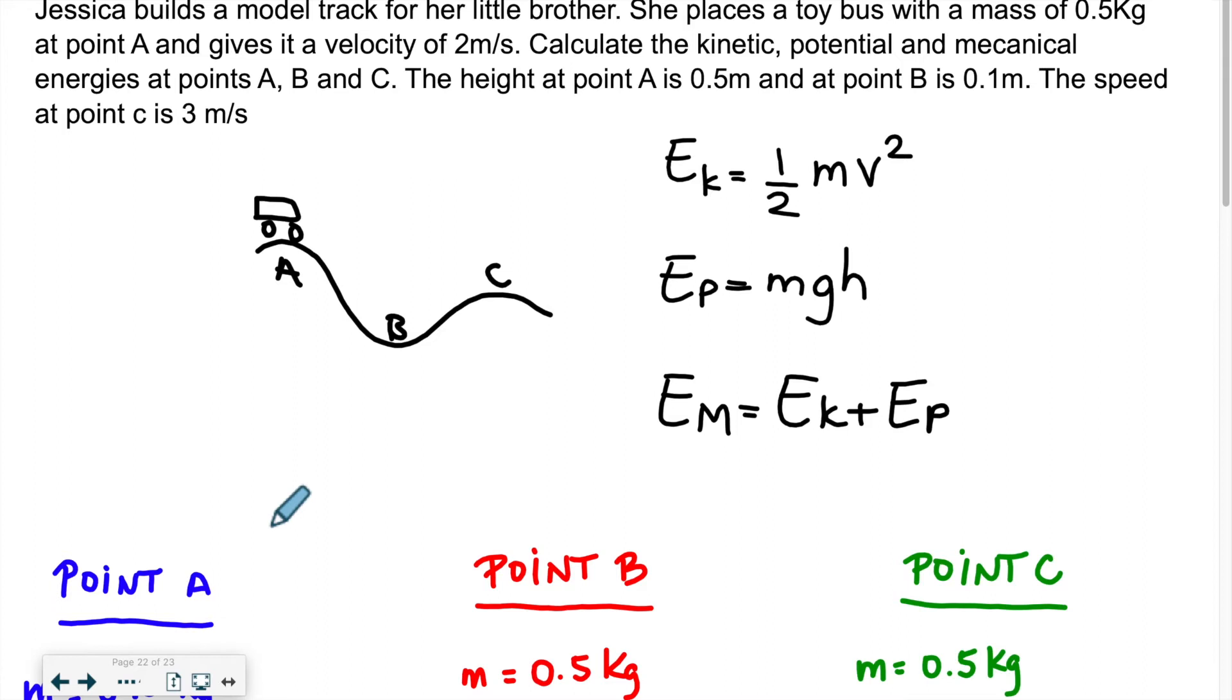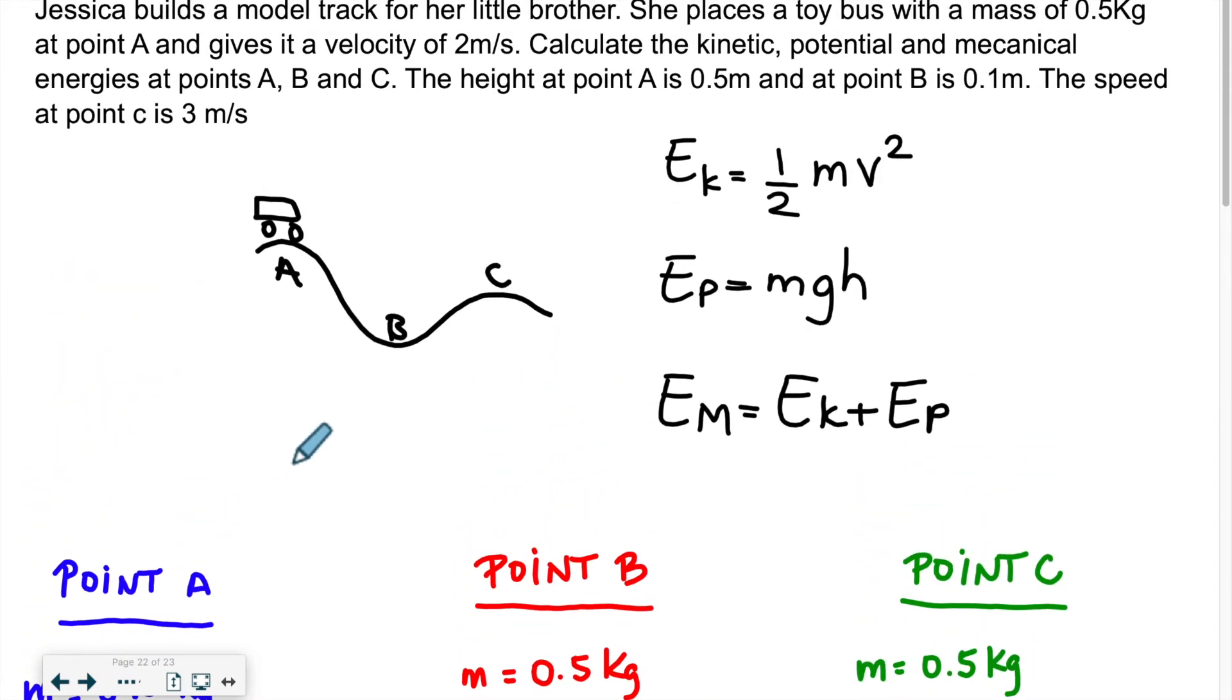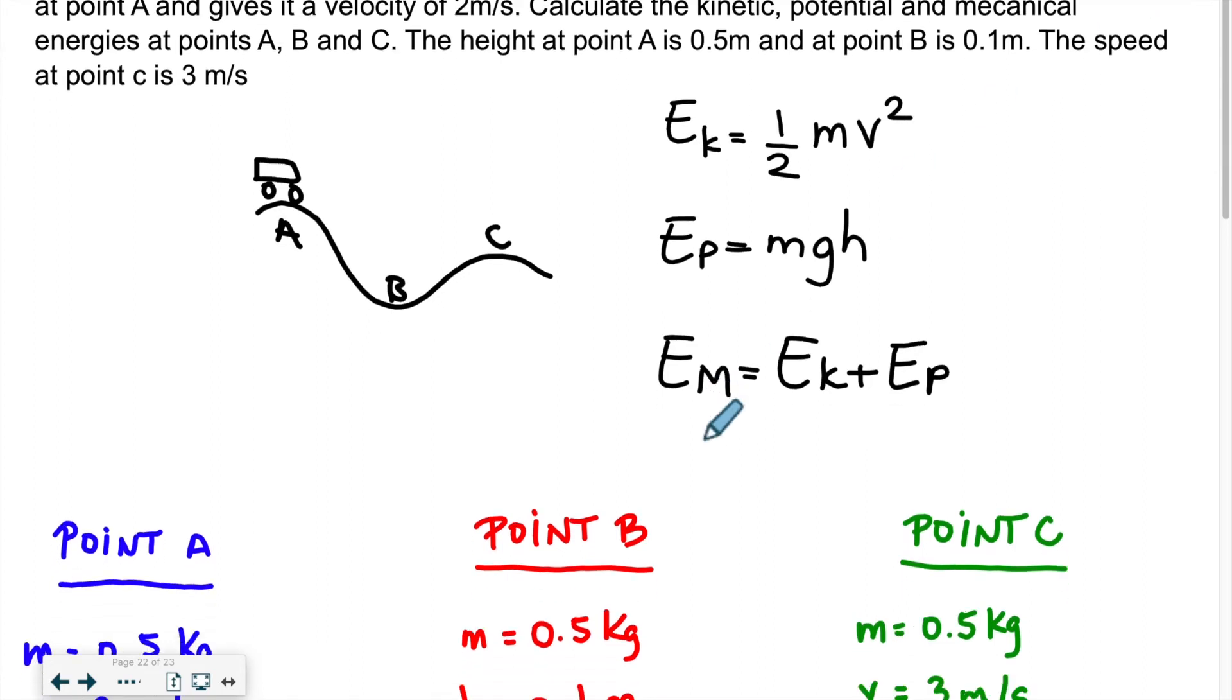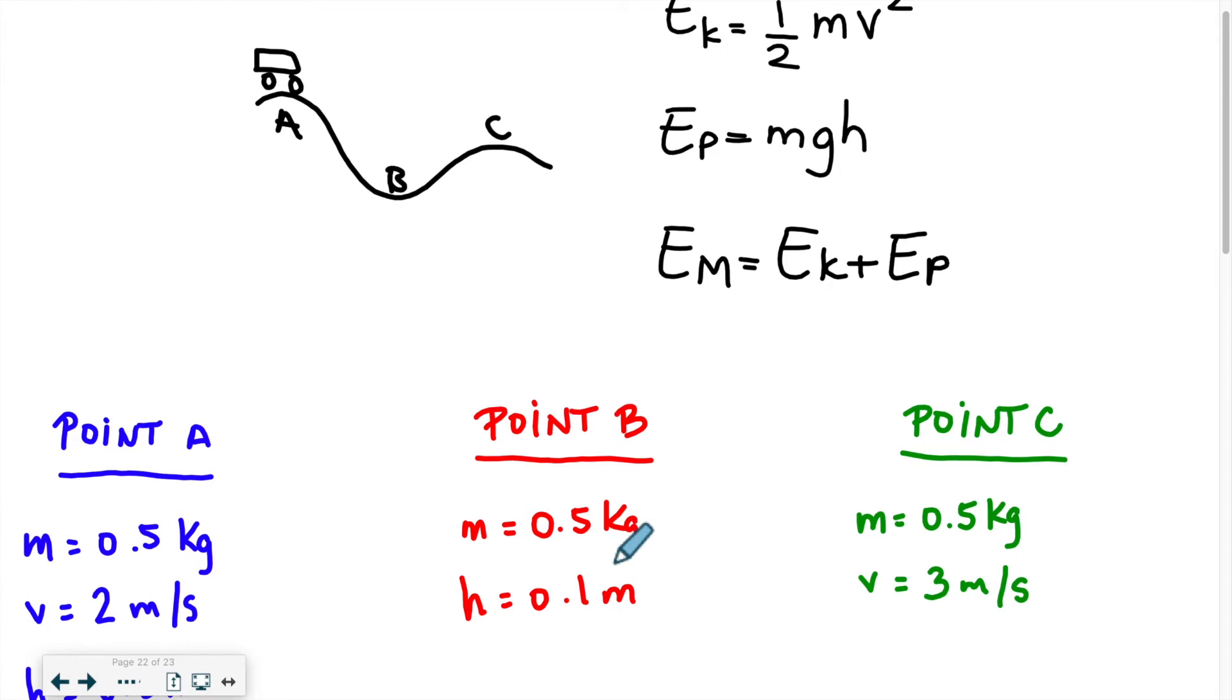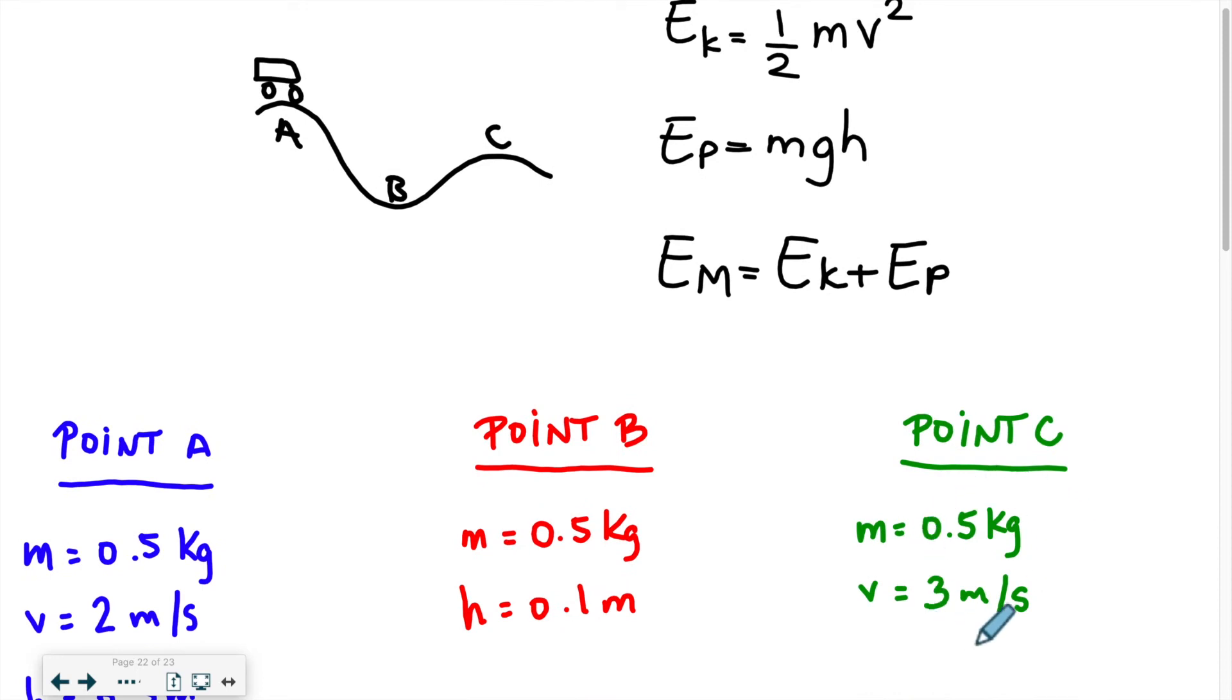Point A will be in blue. We know that the mass is 0.5 kilograms, so obviously that will apply to all three points. At point A, the velocity is 2 meters per second and the height is 0.5 meters. For B, the height is 0.1 meter. That's the only info we have along with the mass. And for point C, we know the speed which is 3 meters per second and obviously the mass is still 0.5 kilograms.